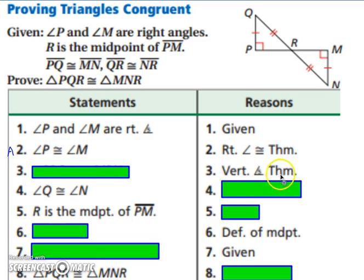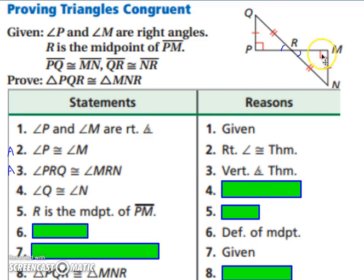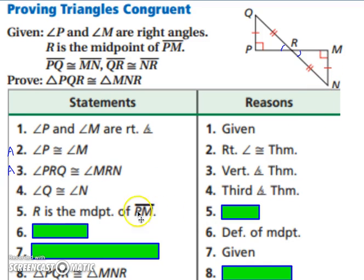By the vertical angles theorem, we can state that angle QRP is congruent to angle NRM, because vertical angles are congruent. That gives us our second set of corresponding angles. Now that we have two sets of congruent angles, we can use the third angles theorem to state that the third set of angles are also congruent — giving us all three sets of corresponding angles.